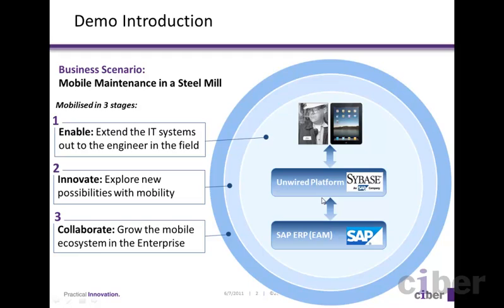Each stage is associated with a particular business problem. The first stage is enablement. Here we are simply extending the functionality of the back-end system — in this case SAP — out into the field. The business problem is an inefficient process where engineers must print out paper forms, which they then fill out on the factory floor before coming back to the office to enter the data into the SAP system. We are not adding any new functionality at this stage, but we increase productivity simply by allowing the engineers to enter information directly into the system while they work via the mobile device.